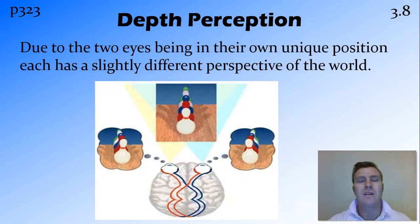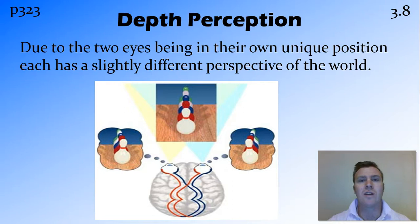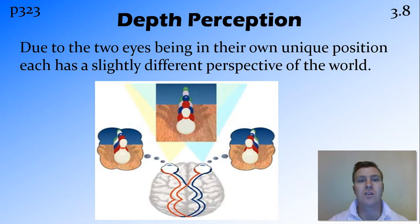Now the way that this stereoscopic vision results in depth perception is that each of these eyes is in its own unique position. They're a couple of inches away from each other, so each of the eyes actually gets a slightly different view of the world, even though they're focused on the same thing.